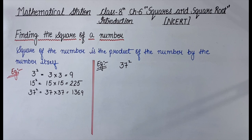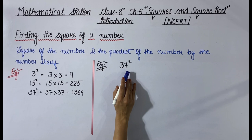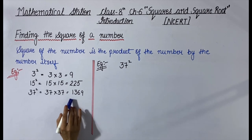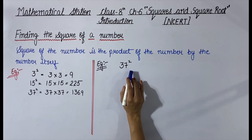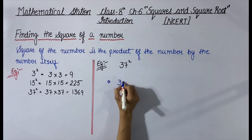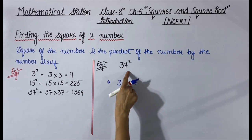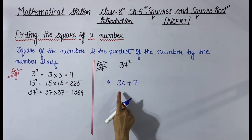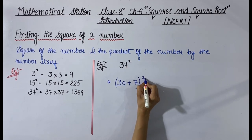We need to learn another method. For example, take 37 squared. We will find 37 squared using this new method and verify our answer. Instead of solving it directly, we split 37: 37 can be written as 30 plus 7. So 37 squared becomes (30 + 7) whole squared.